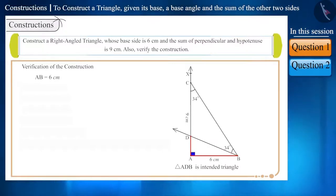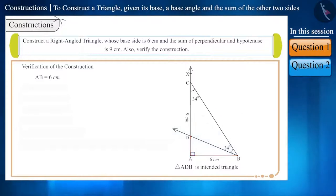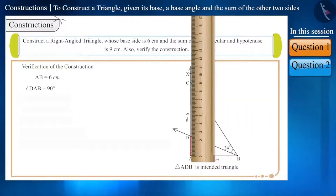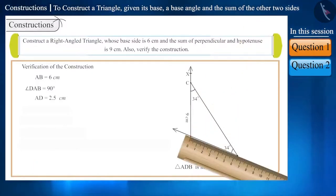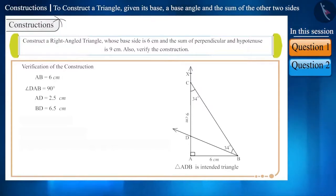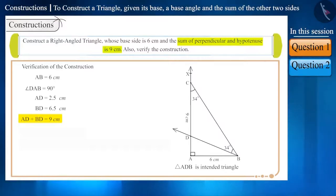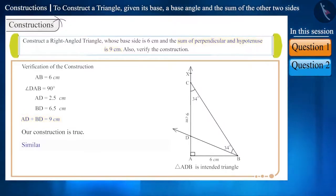Now we will measure the base angle of the drawn triangle ABD with the help of a protractor. The measure of angle DAB is obtained as 90 degrees. Now, we will measure the other two sides. Upon measuring, the length of side AD comes out to be 2.5 cm and the length of side BD comes out to be 6.5 cm. On adding the two sides AD and BD, the sum comes out to be 9 cm. Since the given length and the length of our construction is the same, our construction is true.